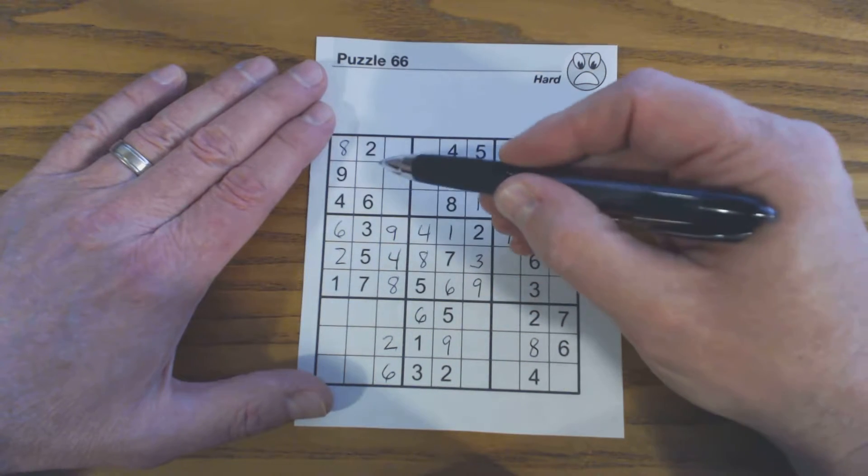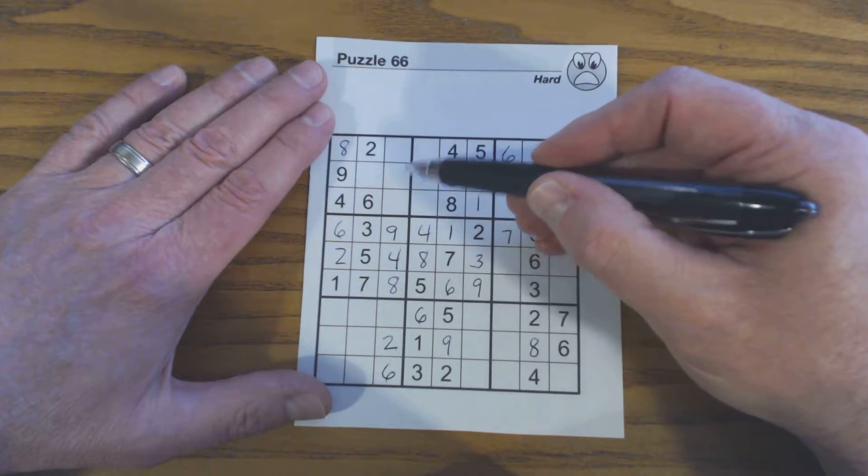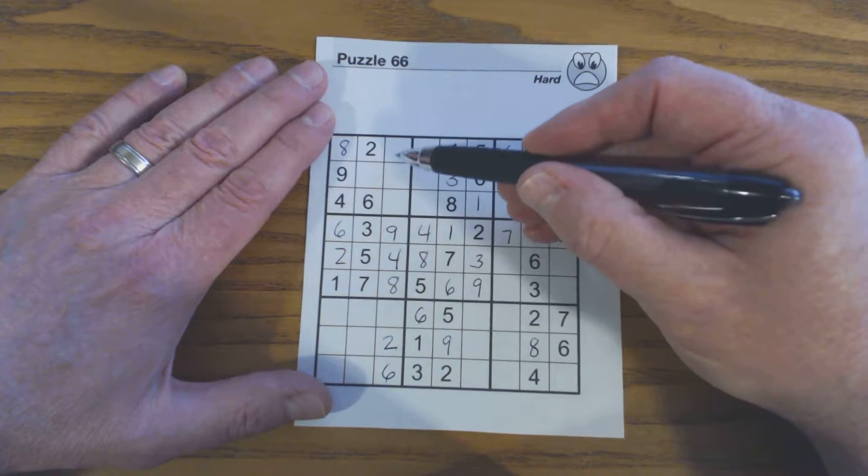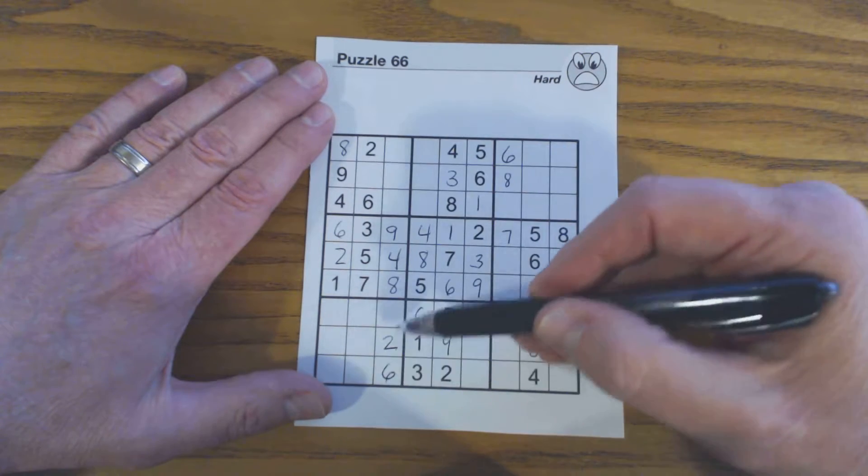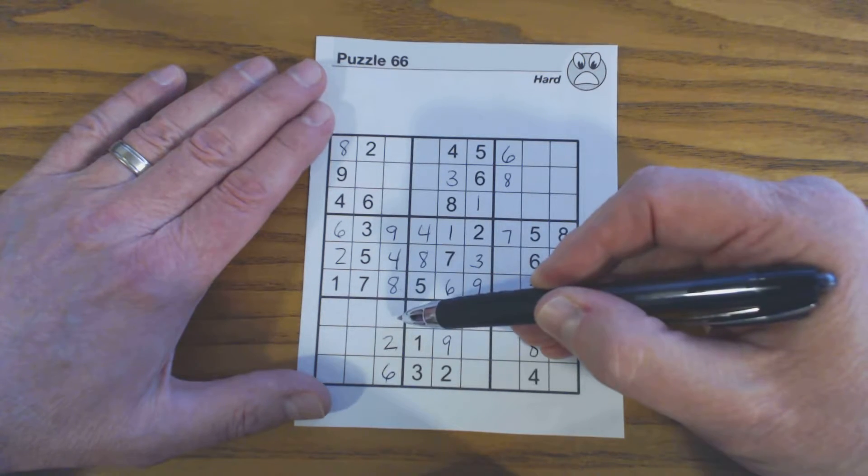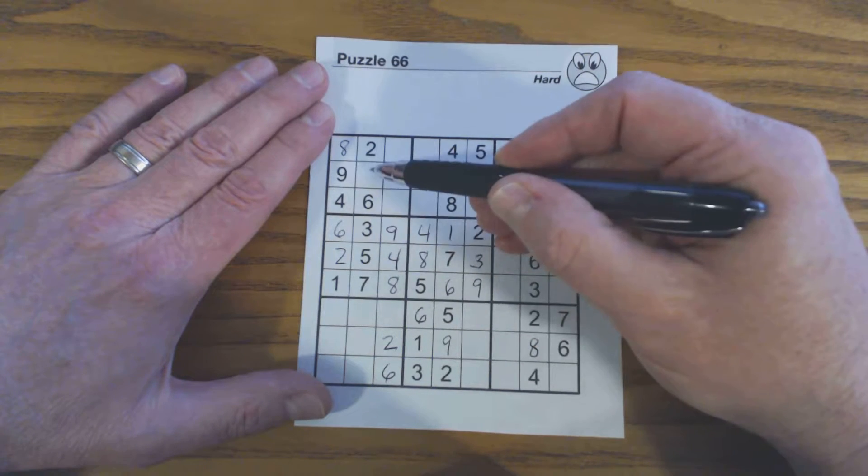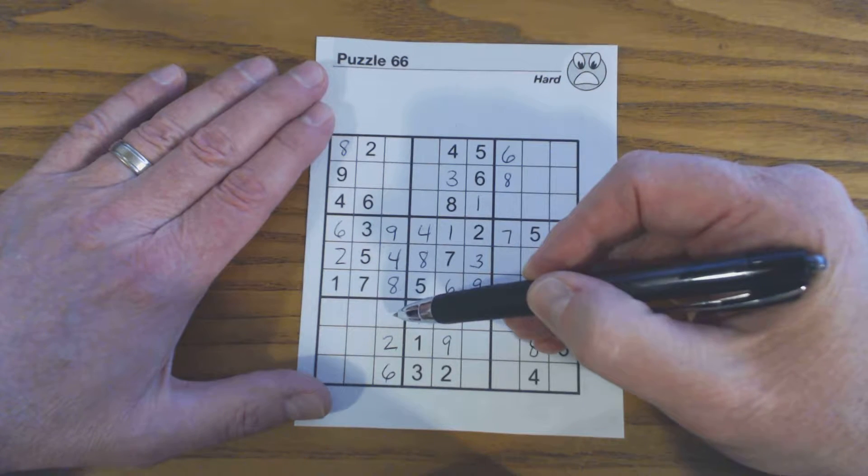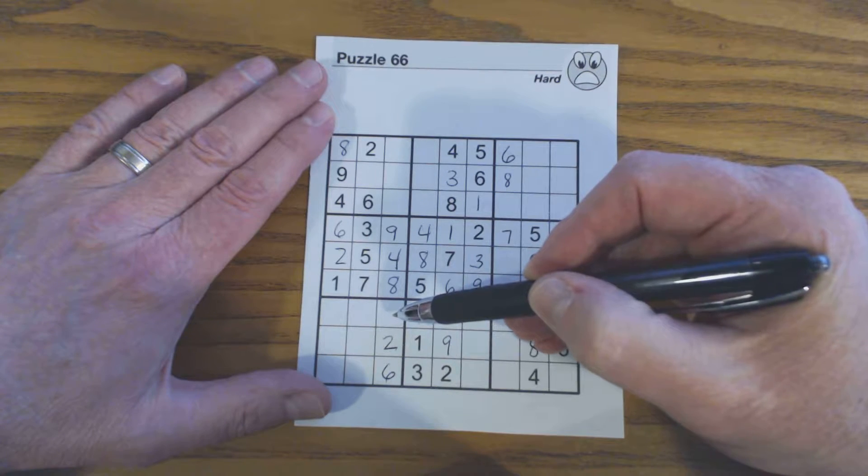Another interesting thing about this loner cell is there's only one cell outside of this square that's in this column that isn't populated. And therefore this number and this number have to be the same number. That's what we call identical twins.